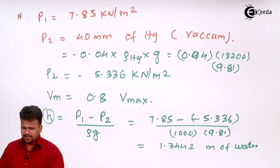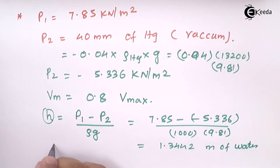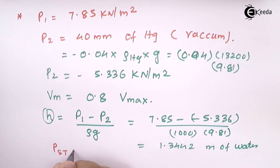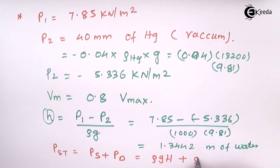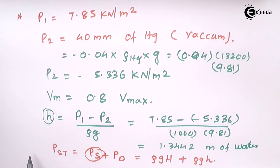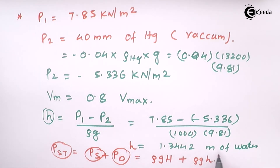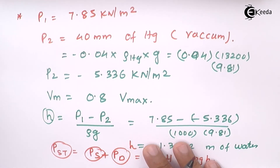The stagnation pressure equals static pressure plus dynamic pressure, where static pressure is rho g H and dynamic pressure is rho g h. The difference between the stagnation pressure and the static pressure gives us the dynamic pressure. So 1.3442 meters is the dynamic head of the water which we have calculated.